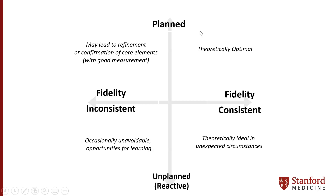What's theoretically optimal is in the upper right-hand corner: adaptations that are planned and preserve the core effective functions or features of the intervention. At times they might be unplanned — we might get thrown a curveball — but it would be important to make an effort to preserve those core elements. Sometimes we can't avoid fidelity-inconsistent, unplanned changes if staffing or resources drop and we can't deliver parts of the intervention. But it's important to measure and learn from that. And with good measurement, planned fidelity-inconsistent modifications can actually help us confirm whether or not something is a core element.